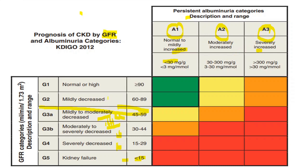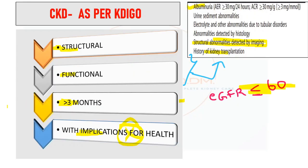The question arises: what if a patient has an eGFR of 70 with normal albumin? That falls under the normal category — no need to label it as CKD. Whether to label Stage 1 or Stage 2 is a gray zone not clearly defined. If albuminuria is more than 30 mg and GFR is low, there is a risk of CKD progression, but the definitive CKD definition requires eGFR less than 60 for more than three months.